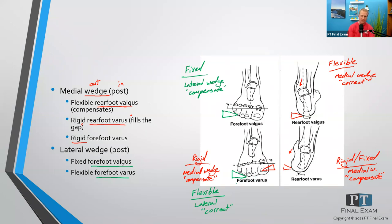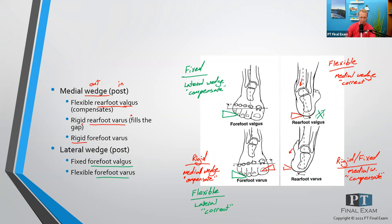Those are the ones discussed in the literature — my primary resources here are O'Sullivan's Physical Rehabilitation, the section on orthotics, as well as Dutton's Orthopedic Examination, Evaluation, and Intervention. Now, if you want to follow this to its logical conclusion, in the case of a rigid rearfoot valgus you could technically put a lateral wedge in, but it's not described because the lateral wedge is going to push you more into pronation. For a flexible rearfoot varus, a lateral wedge could push you back into correct position, though it's not the primary recommendation.